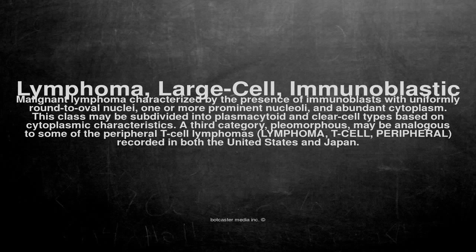Lymphoma, Large Cell, Immunoblastic. Malignant lymphoma characterized by the presence of immunoblasts with uniformly round to oval nuclei, one or more prominent nucleoli, and abundant cytoplasm. This class may be subdivided into plasmacytoid and clear cell types based on cytoplasmic characteristics.